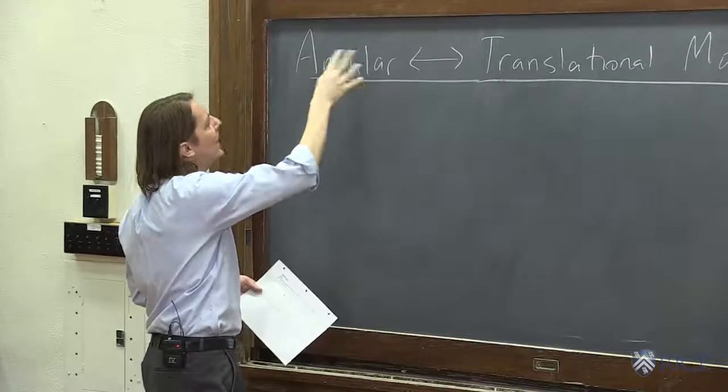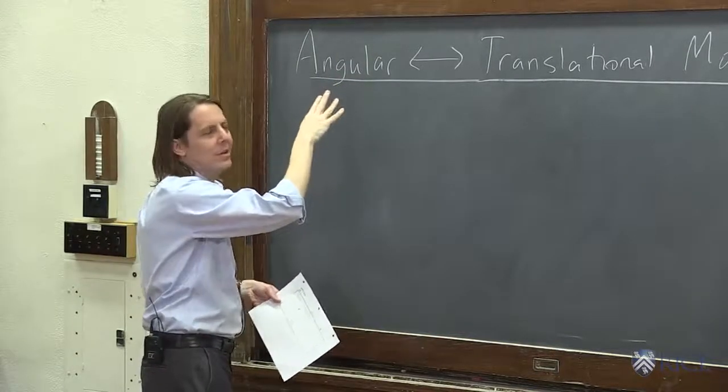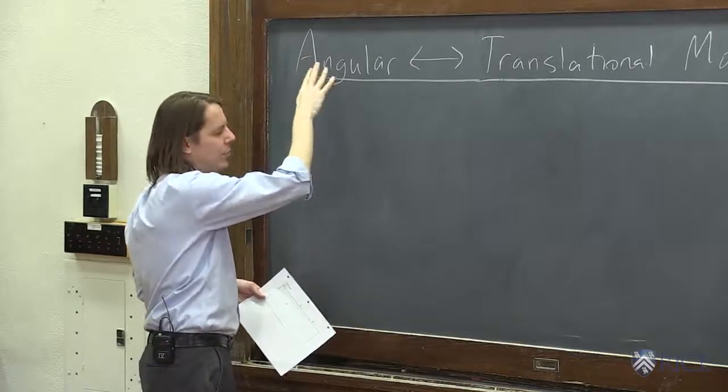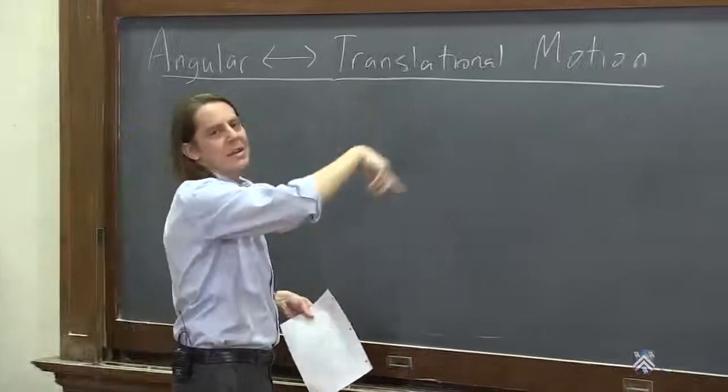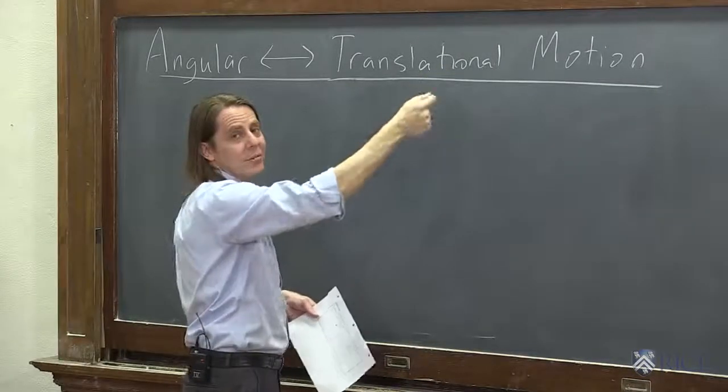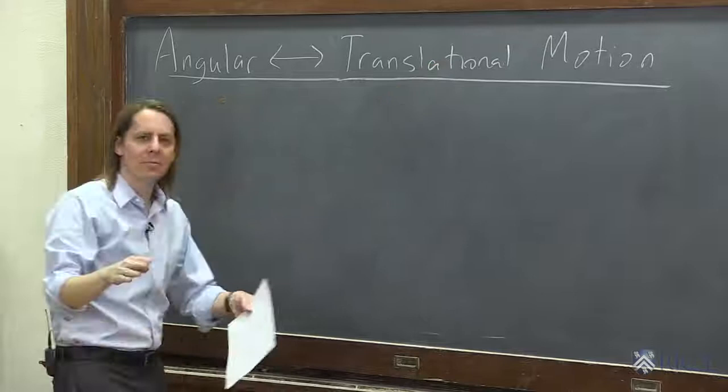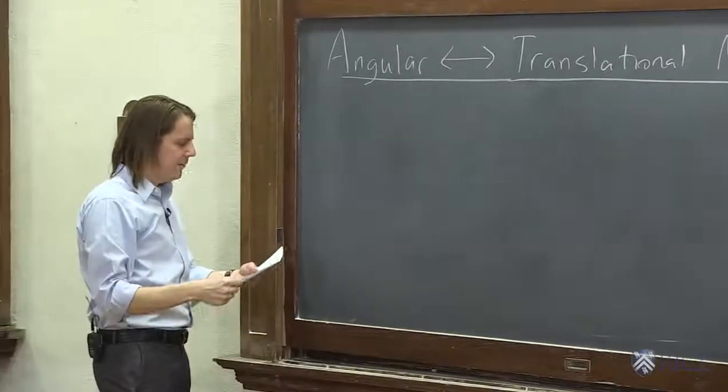So we're going to look, we're going to go between angular omega and period, or angular velocity and period, omega and T, to just the speed and the acceleration, the centripetal acceleration, which isn't really translational, but you know what I mean. Omega T and v and a.